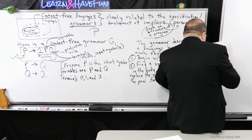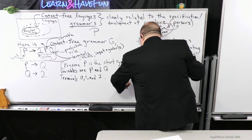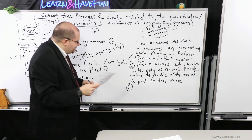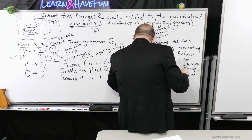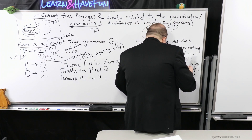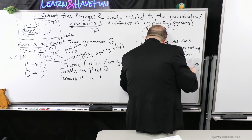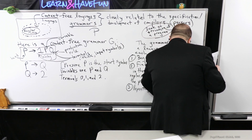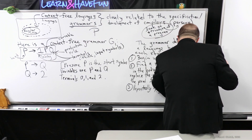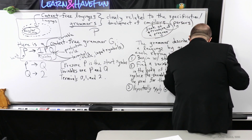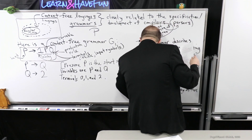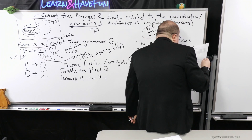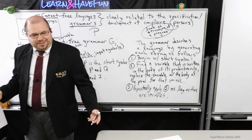Step three: repeatedly apply step two as long as there are variables. I stop this process once I just have a string of terminals.